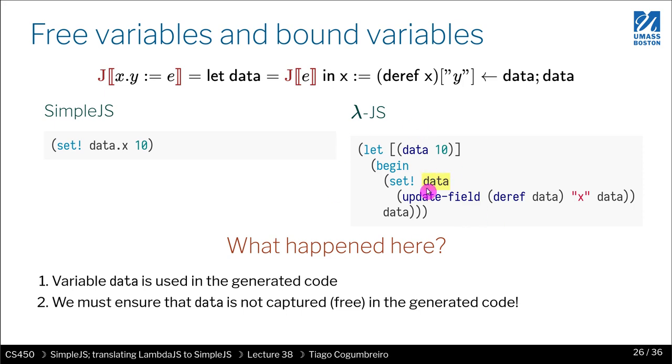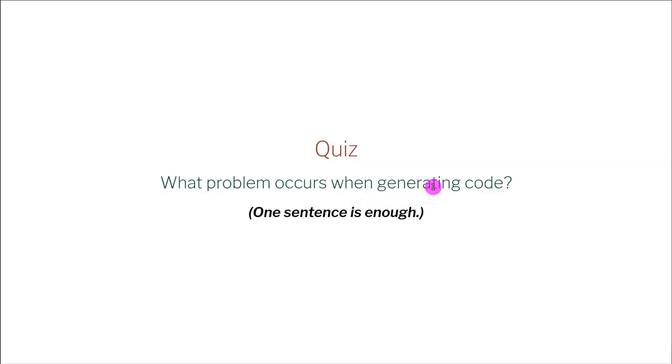But this is a very important problem. And there might be some tests for the last few points that capture this. So now that we talked about the problem, what is the problem that occurs when generating code? So try to explain it in your own words, what I just explained to you.